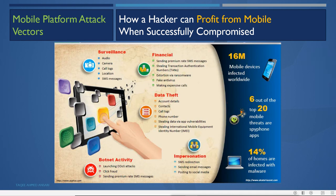How can a hacker profit from a successfully compromised mobile device? First, surveillance: the attacker can record audio, record via camera, view call logs, location, and SMS messages. For botnet activities, the mobile can be used to launch DDoS attacks, perform click fraud, and send premium-rate SMS messages, which causes financial harm to the victim.